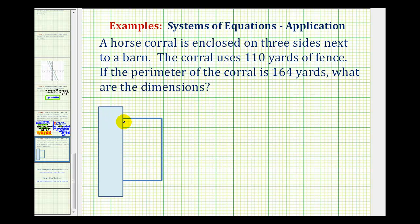So starting with our corral, we should notice it's a rectangle, and therefore opposite sides do have the same length. So if we call this x, this length would also be x. If we call this length y, then this opposite side here along the barn would also be y.